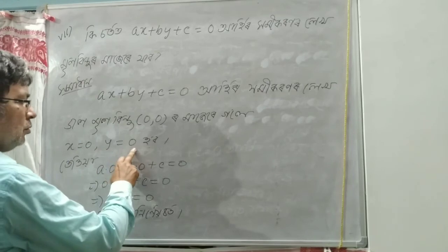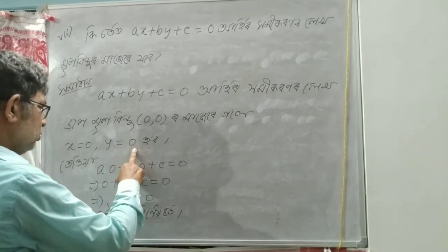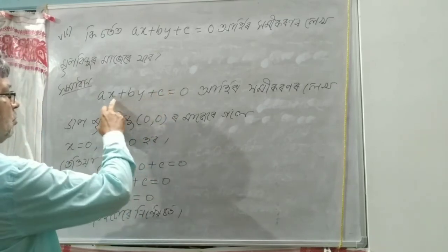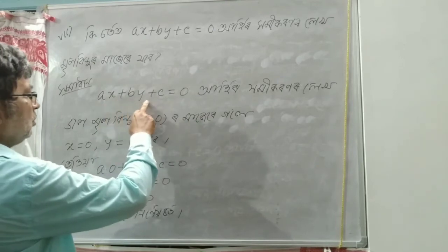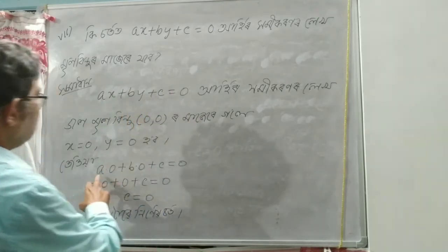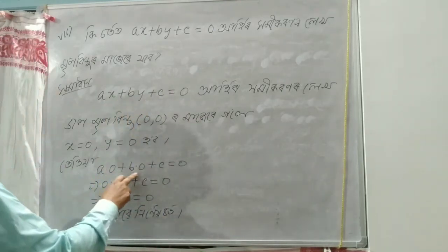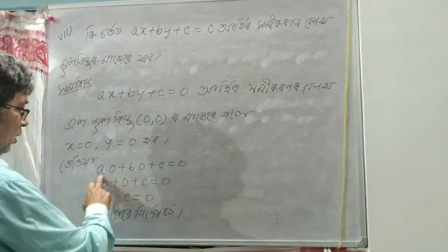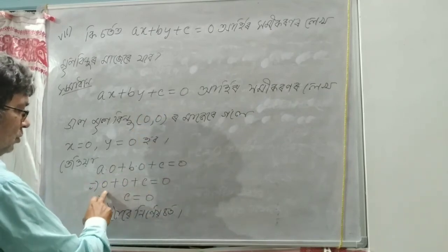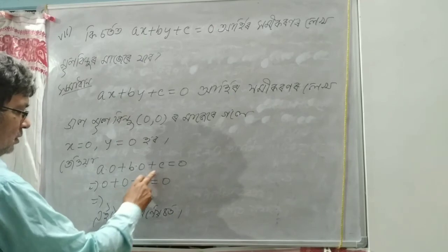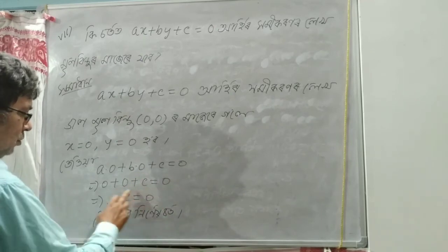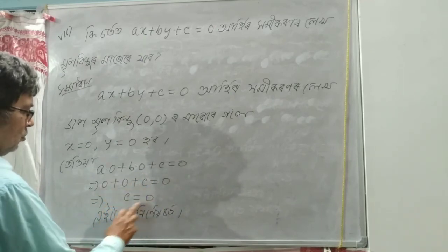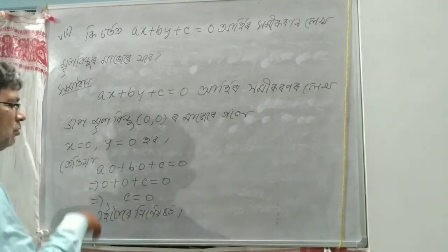y is equal to 0. So if we choose x is equal to 0 and y is equal to 0, then n is equal to 0, plus c is equal to 0, n is equal to 0, b is equal to 0, then c is equal to 0.